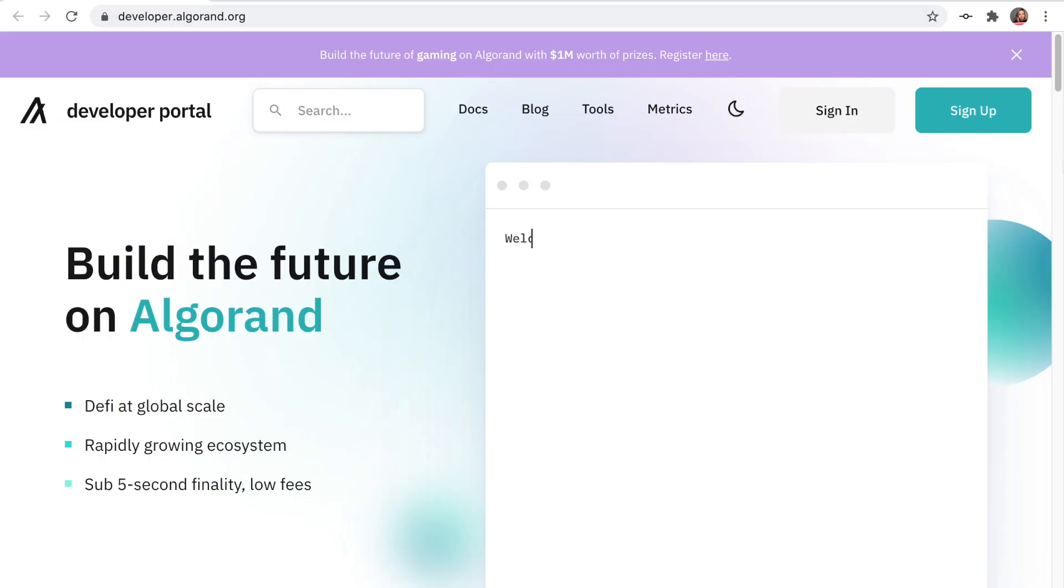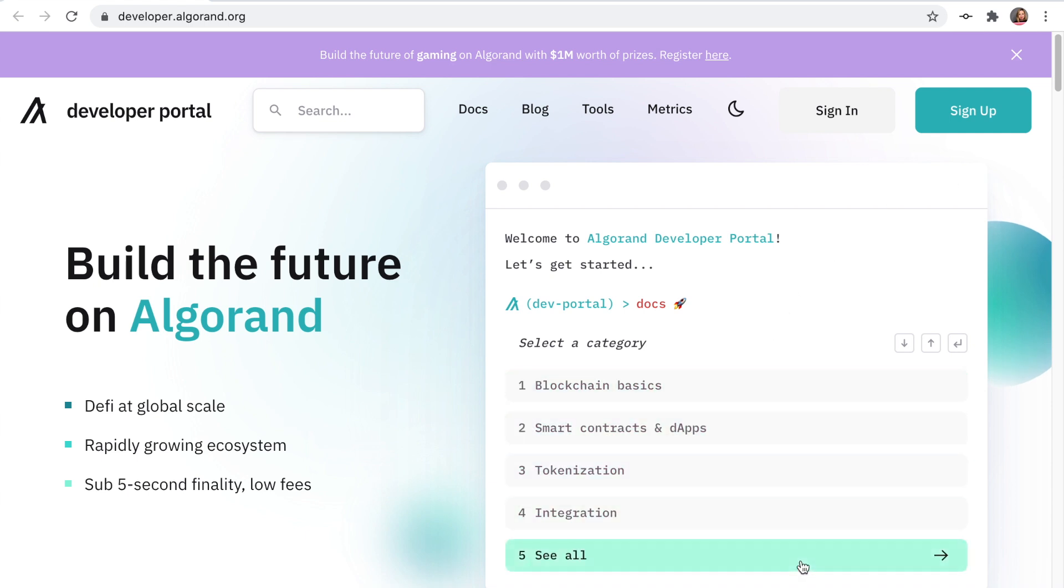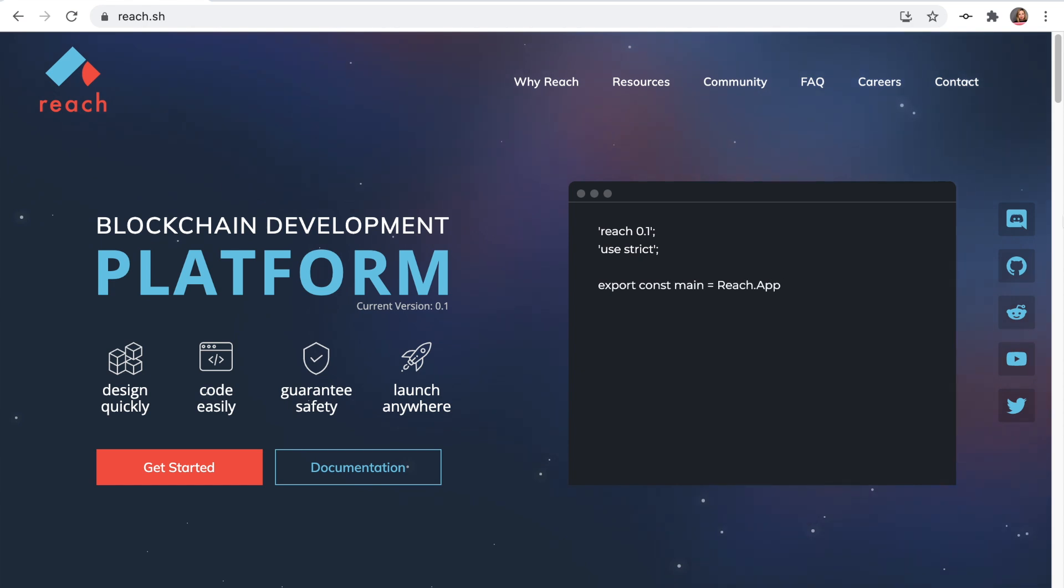Before we get started, a huge thank you to Algorand and Reach for sponsoring this series. Algorand is a blockchain that's open-source and decentralized. It's also the blockchain we'll be deploying our application to. Reach is the platform and programming language we'll be using to create our decentralized app.